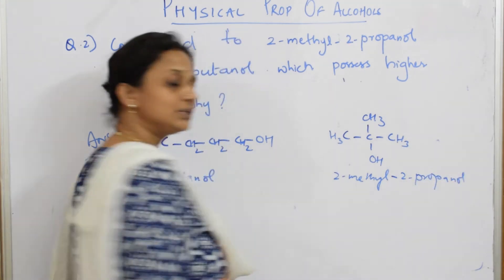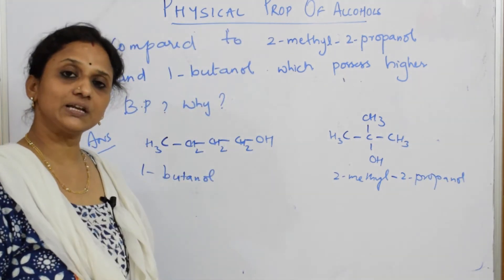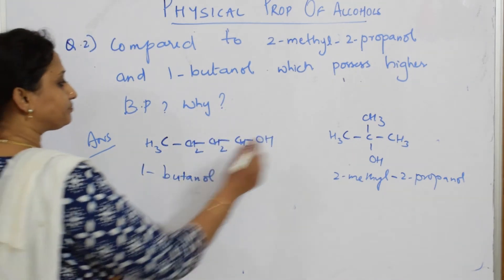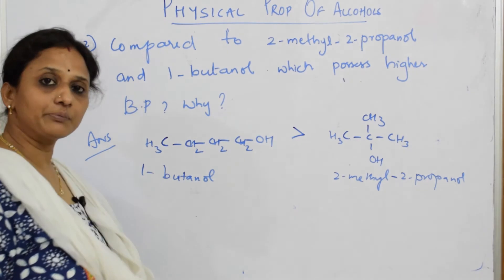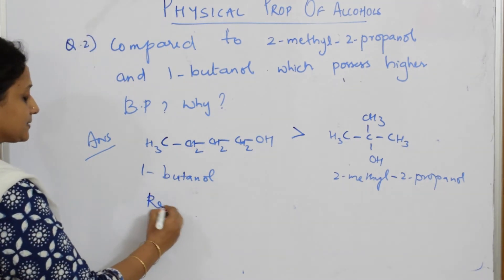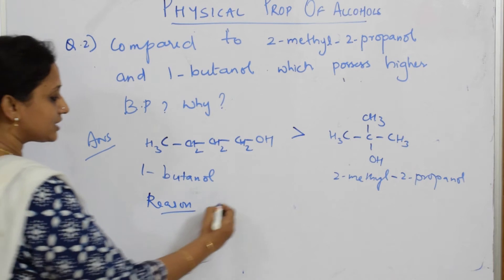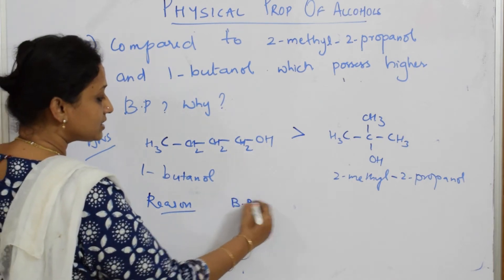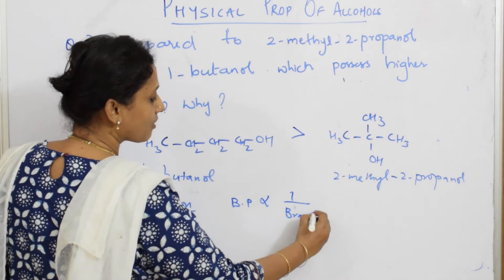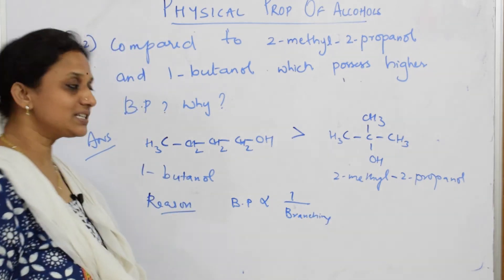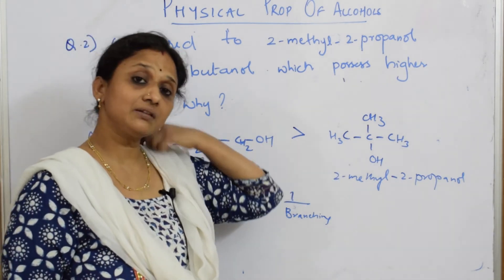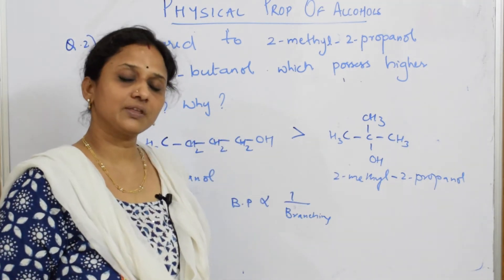Now they're asking among these two which possesses higher boiling point. I will say 1-butanol possesses higher boiling point. What is the reason? Boiling point is inversely proportional to branching. What is happening in this molecule? 1-butanol is not branched, while 2-methyl-2-propanol is branched. What type of forces are acting on the branched molecule?